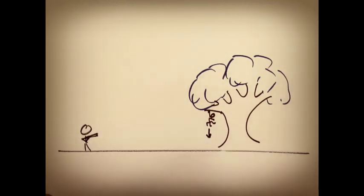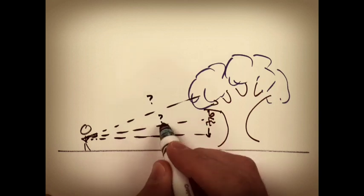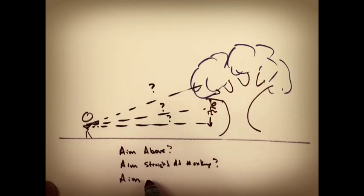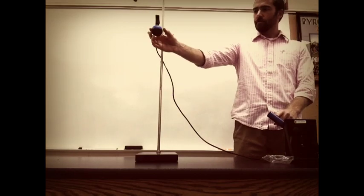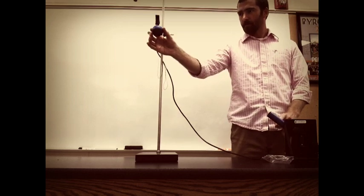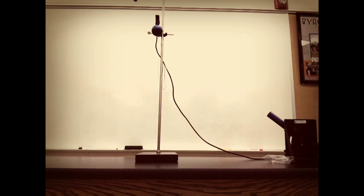The hunter must decide: should I aim above the monkey, directly at it, or below it? Which will help hit the monkey as it falls? That's the question. So we decided we could test it. The easiest one to test would be: what if we aimed our projectile directly at the monkey? We bring up an electromagnet, we shoot, and we see that it hits. So aiming directly at it seems to be the way to go.